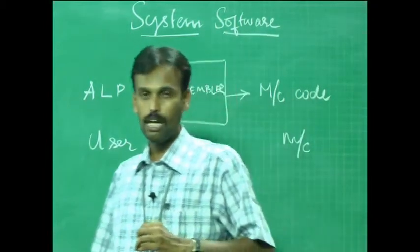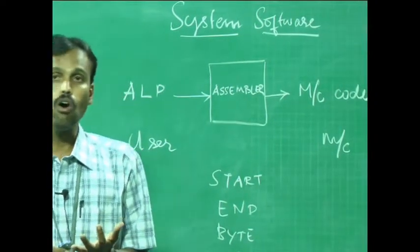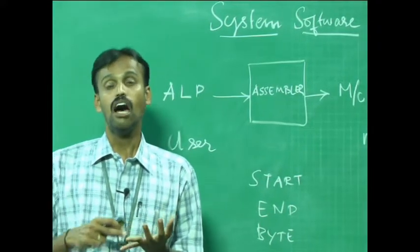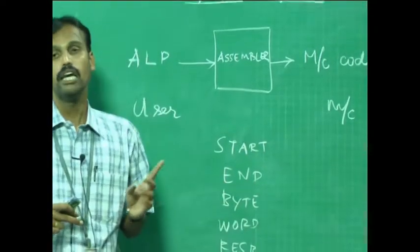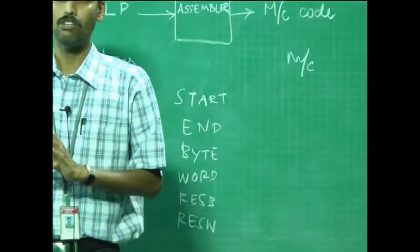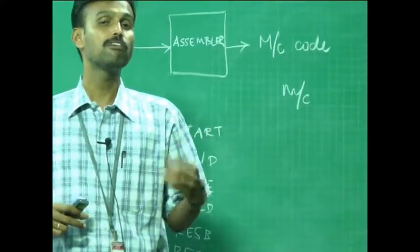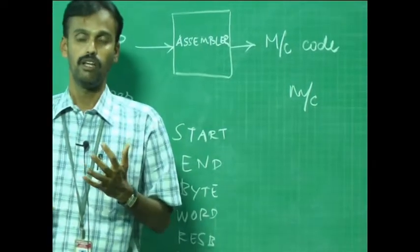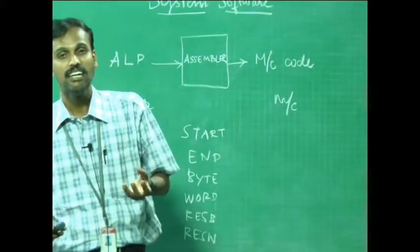In Pass 2, we assemble all instructions, generate data values defined by BYTE and WORD directives, and perform processing of assembler directives that were not handled in Pass 1. Some assembler directives are processed in Pass 1 and the remaining are reserved for Pass 2. Finally, Pass 2 writes the object program and creates the assembly listing. This is how a two-pass assembler works.